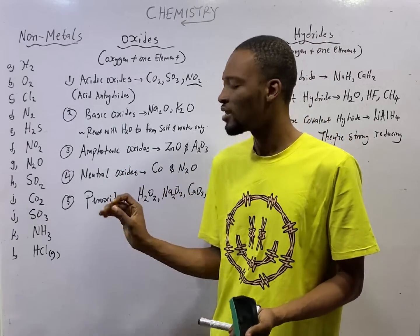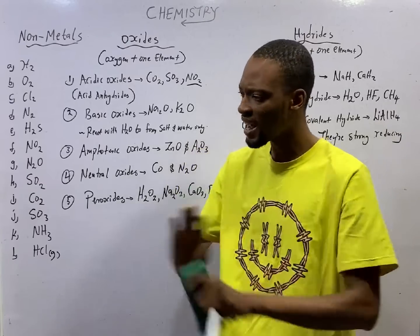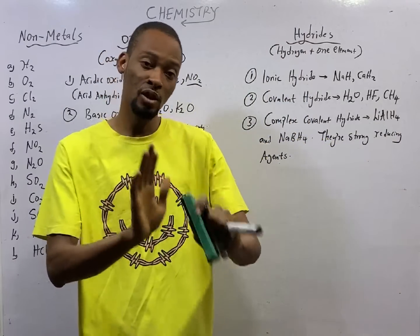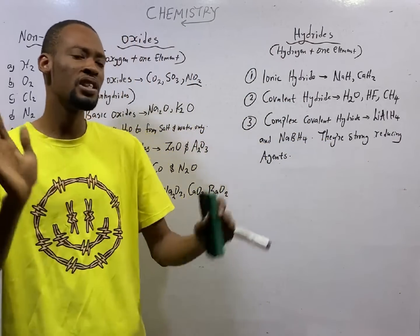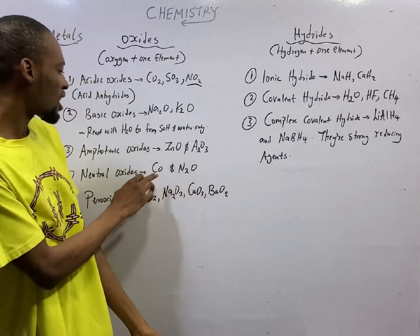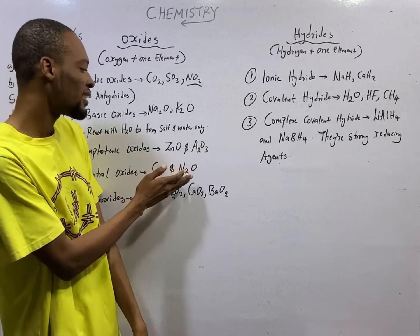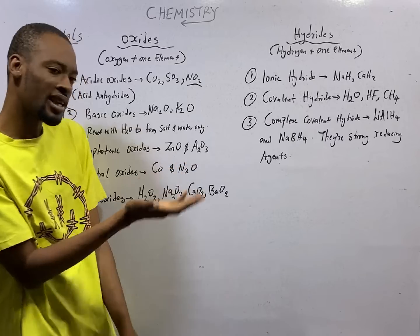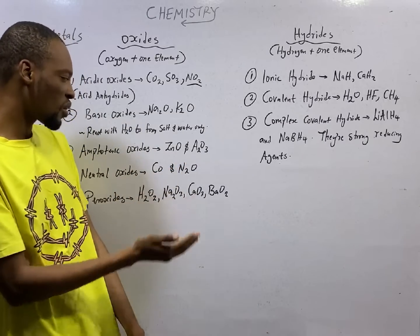We have neutral oxides. Neutral oxides are neither acidic nor basic. They don't have acid property. They don't have basic property. They are carbon monoxide and dinitrogen-1 oxide. They are neutral oxides.